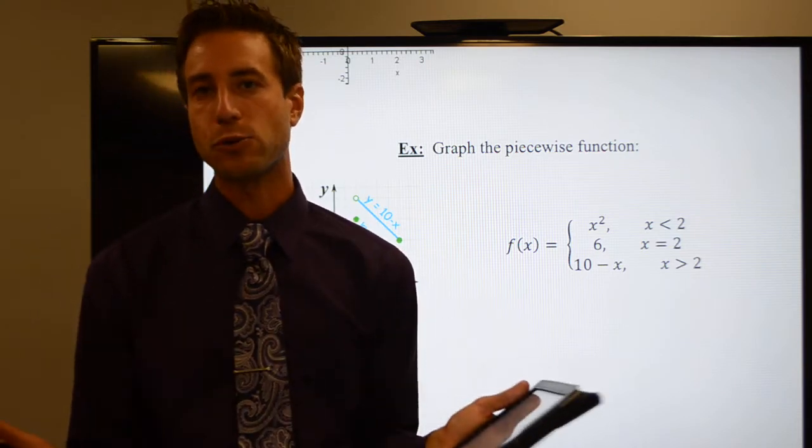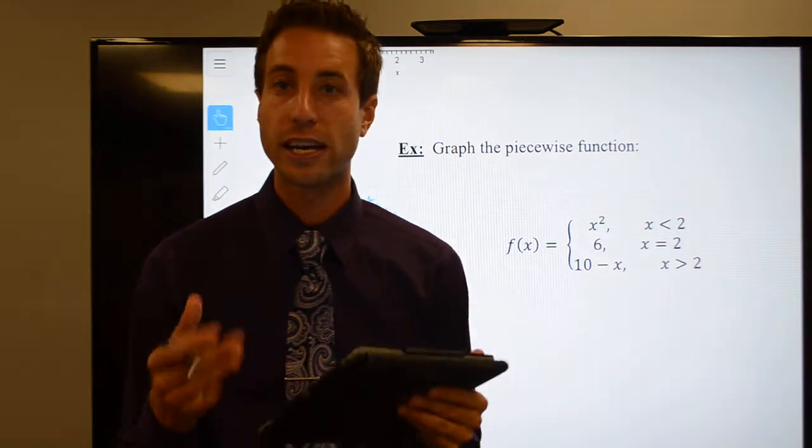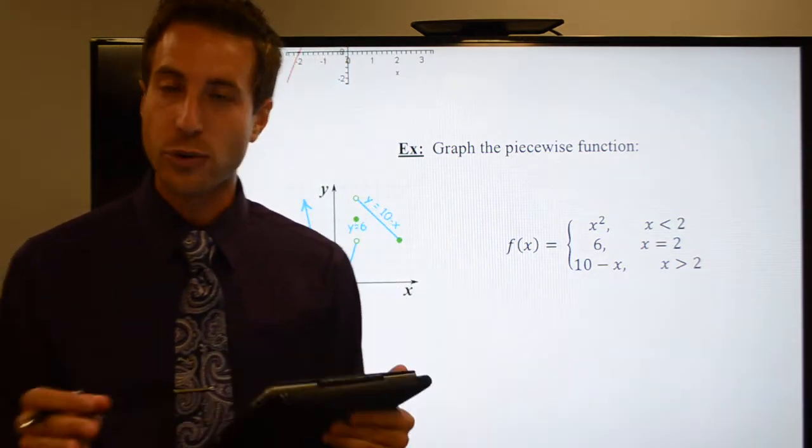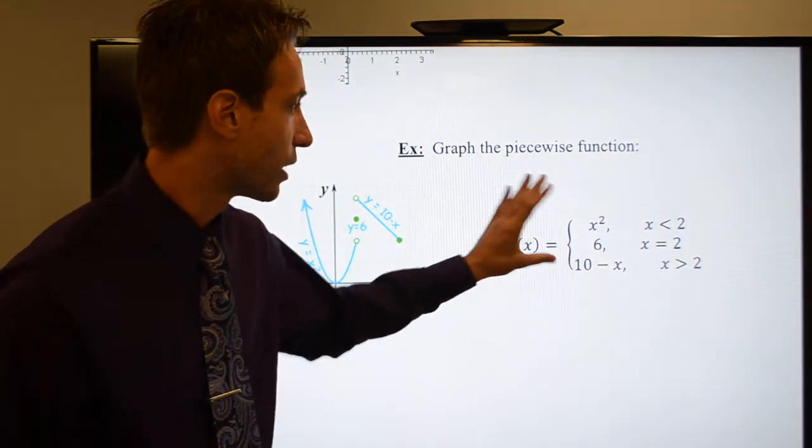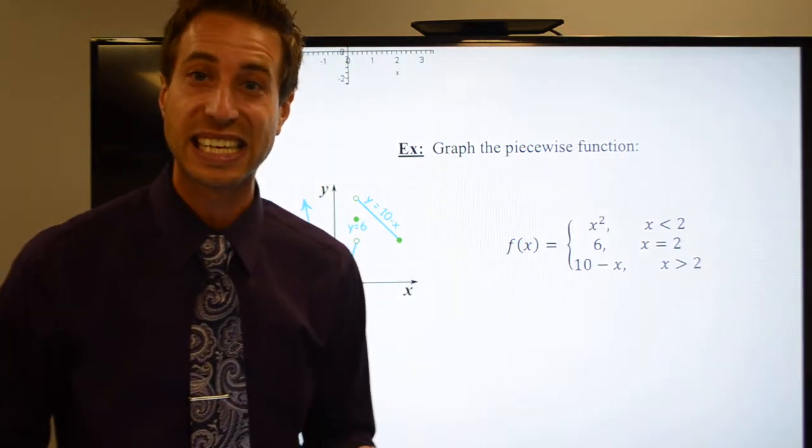Now, it does absolutely no good whatsoever to go through problems that I have already solved. So now that you know what this piecewise function is, they look like this. F of x is equal. We use the brace to put all of our pieces together.